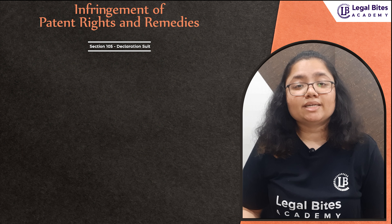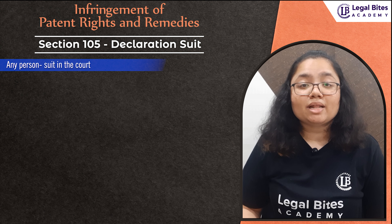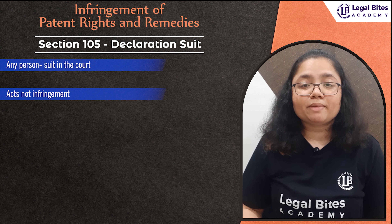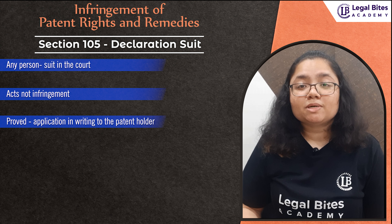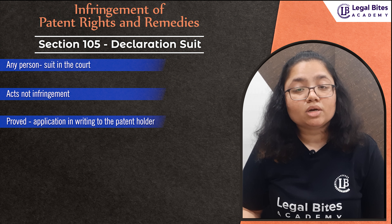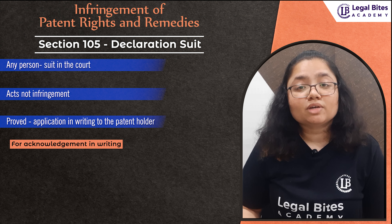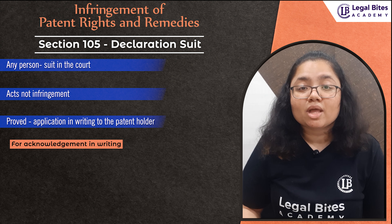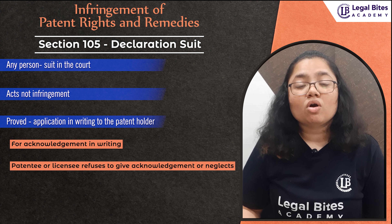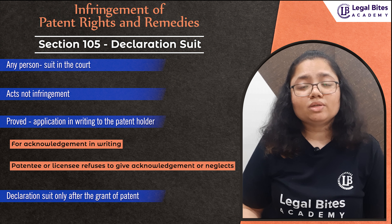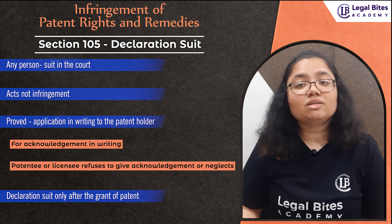Under Section 105, any person can institute a suit in the court seeking a declaration that the acts he is doing do not infringe the patent rights of the patentee, if it is proved that such person gave a written application to the patent holder or his exclusive licensee for acknowledgement that all details of the claims of the process or article are given to him, and such patentee or licensee refuses or neglects to give the acknowledgement. The declaration suit can also be made after the grant of patent which is published by the controller, and it can only be done after the publication.